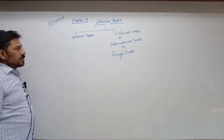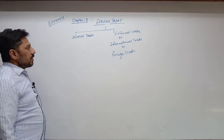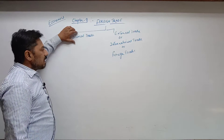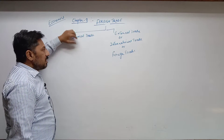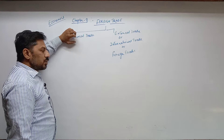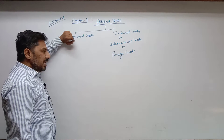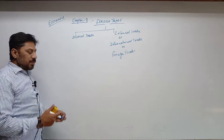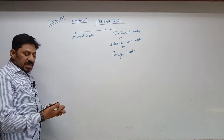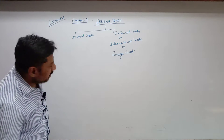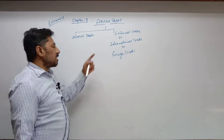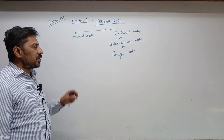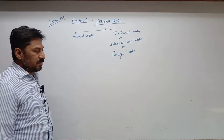On the basis of location, there are two types of trade: internal trade and external trade. Internal trade refers to business activities which take place within the geographical boundary of the same country. External trade is when a trade relation is established between two or more than two countries.